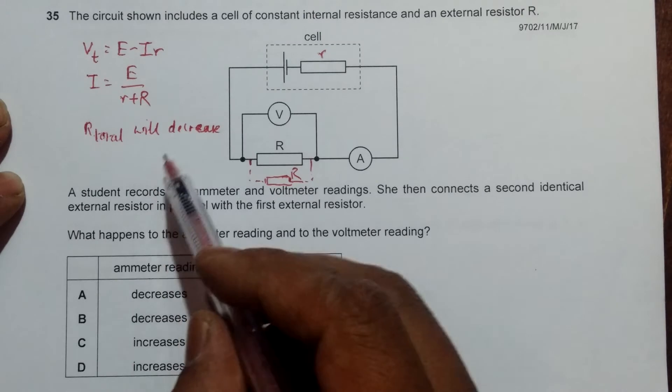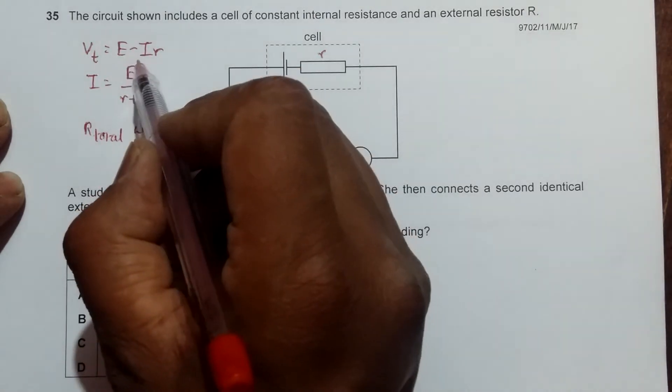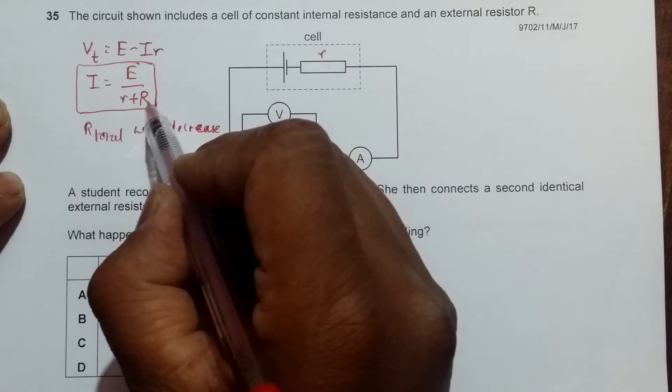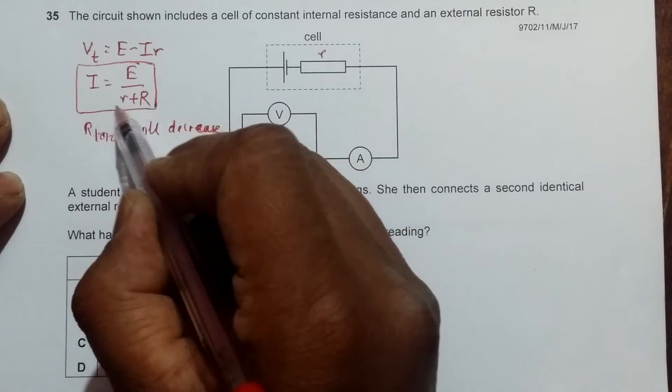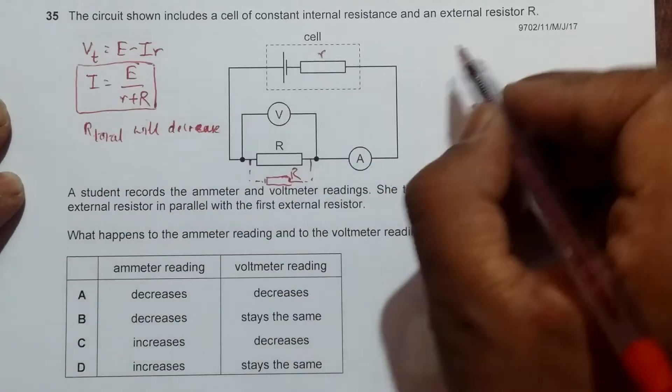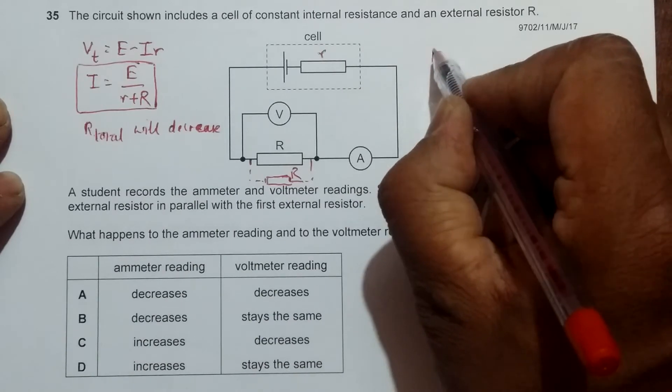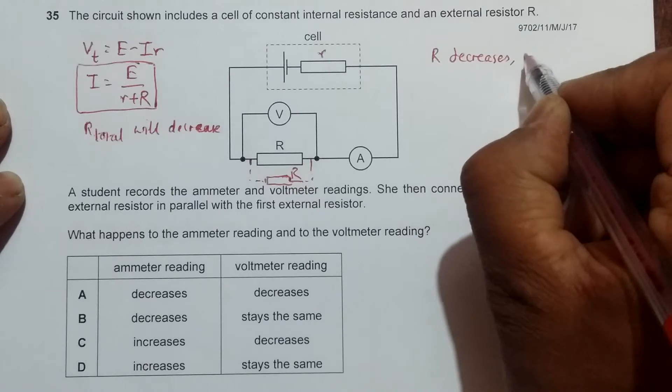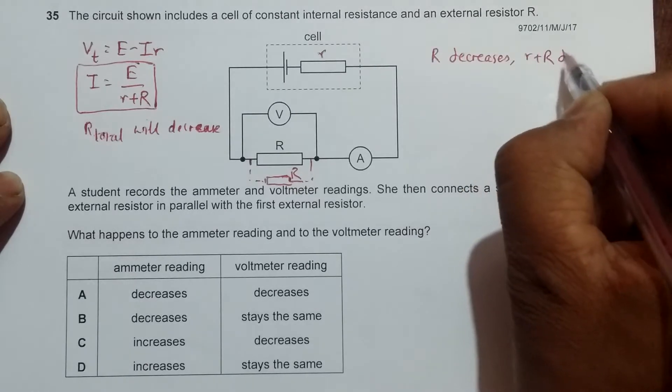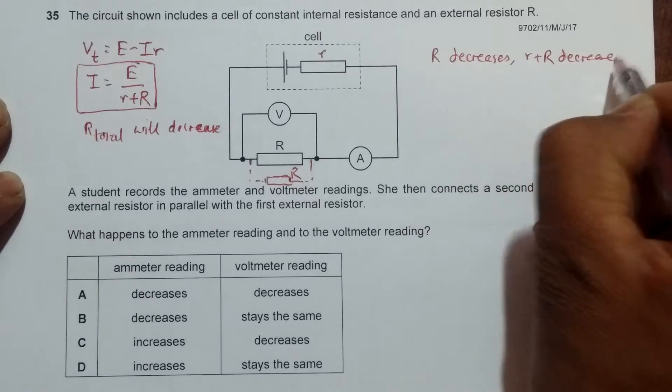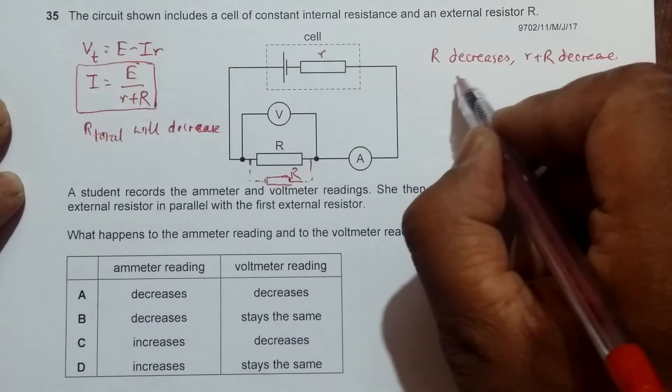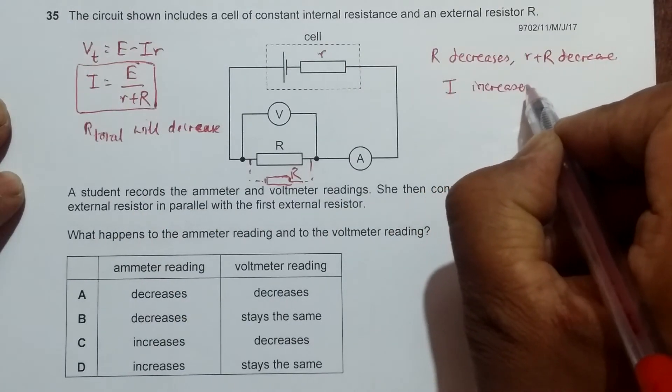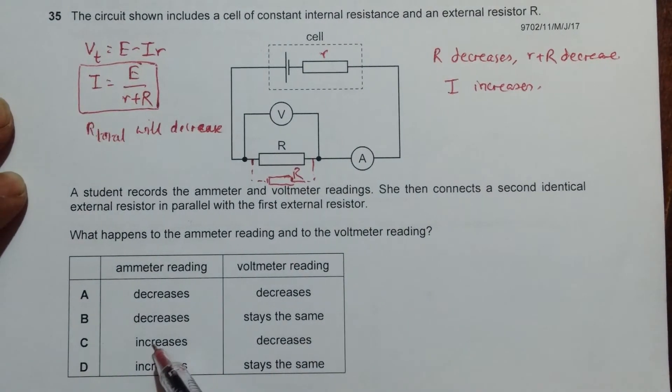If I apply this condition to the current here, since R decreases, this whole thing will decrease. This means that since r plus R also will decrease, and since E is constant, then I must increase. So our choice remaining will be either choice C or choice D.